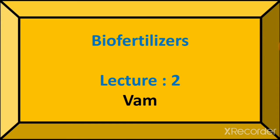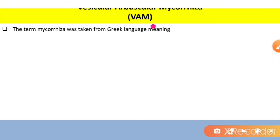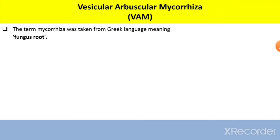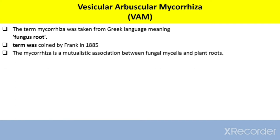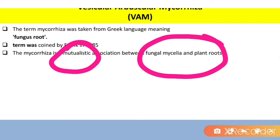This is the second lecture on biofertilizers, where we are going to understand VAM. VAM stands for Vesicular Arbuscular Mycorrhiza. The term mycorrhiza was taken from the Greek language, which means fungus root, and the term was coined by Frank in 1885. Mycorrhiza is a mutualistic association between fungal mycelia and plant roots.